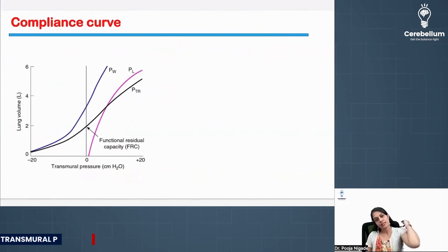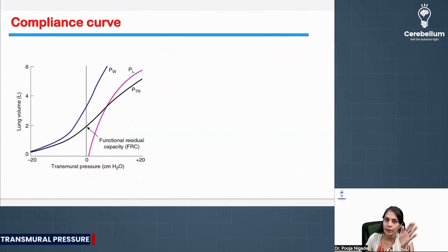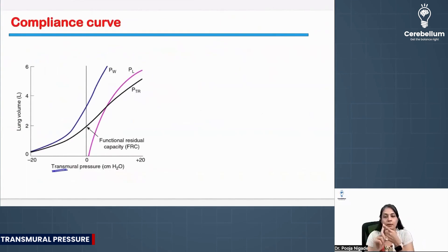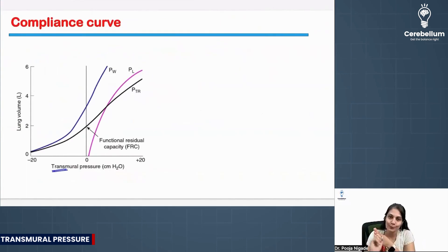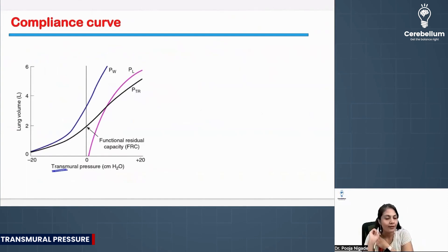The transmural pressures we talked about were transpulmonary, transthoracic, and transrespiratory. Three of these curves are given over here in the graph.